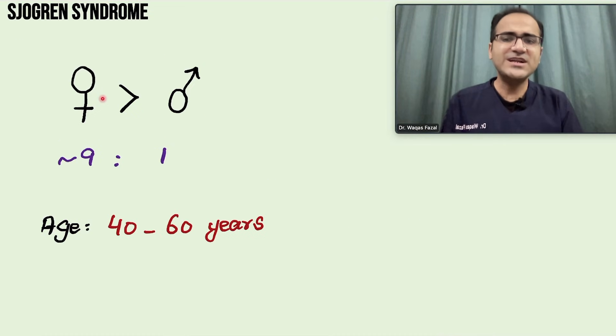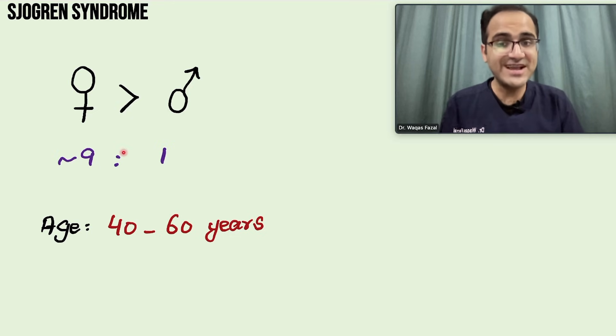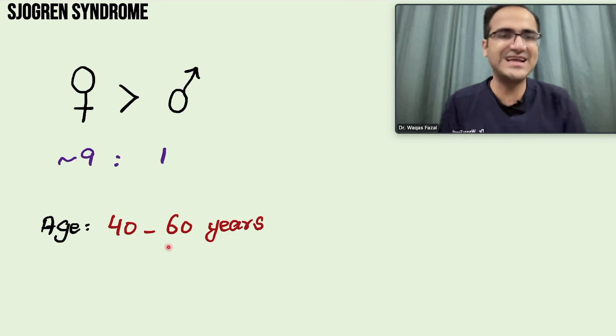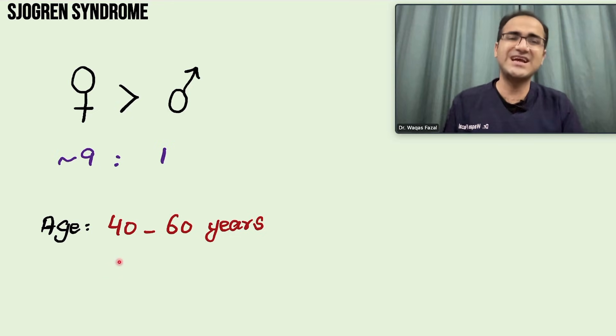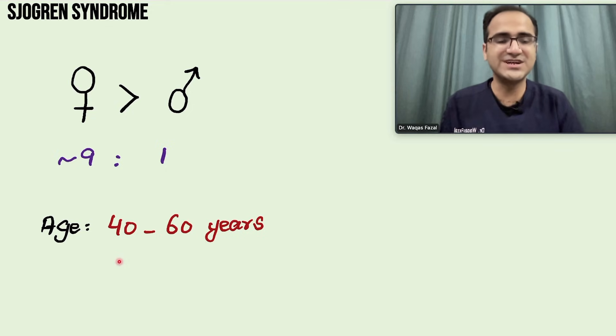Sjögren's syndrome is more common in females compared to males at a 9:1 ratio, and it affects middle-aged females, like all other rheumatological diseases.